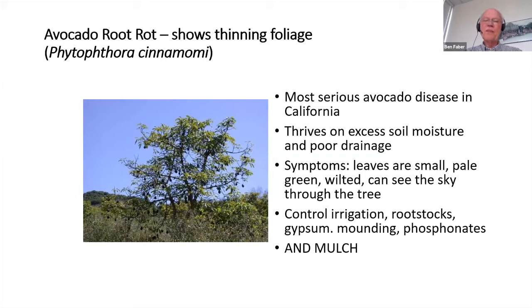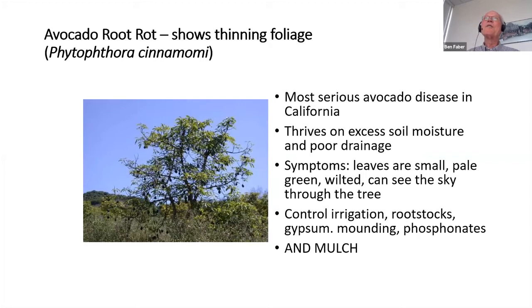We have decent methods of controlling Phytophthora — it goes back to managing irrigation. We have resistant and tolerant rootstocks. Gypsum helps, mounding helps. Phosphonates — called phosphites or phosphorous acid — come under about 30 different brand names and all act about the same. We also use mulch. Mulch is a material that breaks down through decomposition by fungi primarily, and it creates an atmosphere hostile to Phytophthora cinnamomi — but it also creates another situation.